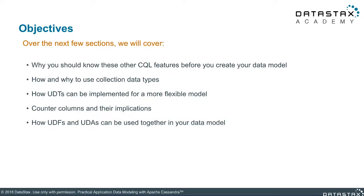So what are we going to cover in the next few sections? Well, first, we will talk about why you want to know about this stuff in the first place and how it's going to help you when you build your data model. Then, we will move on to the collection data types that Apache Cassandra offers. From here, we will move into how you can create your own flexible data types using user-defined types, or UDTs. Then we will introduce counters, which includes what they are, how to implement them, and what to watch out for.